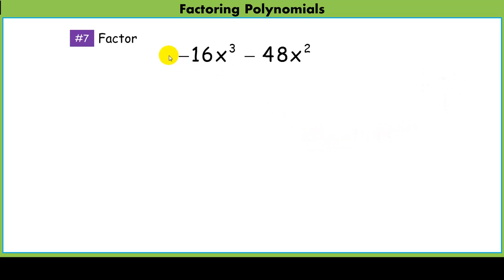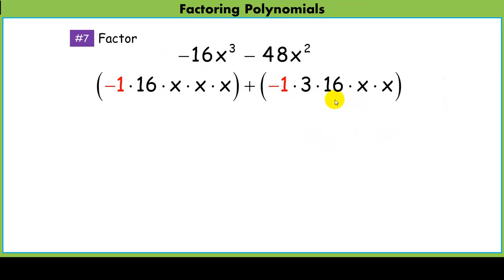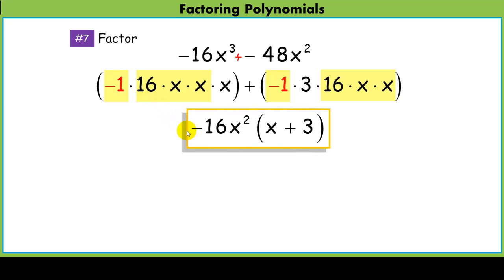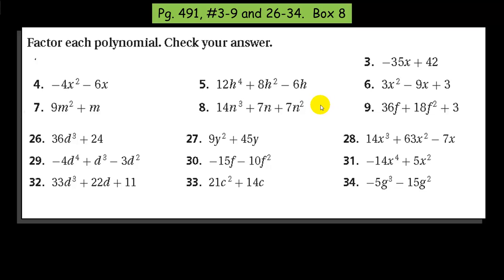This is another challenging one because of the negative signs. Always think of that negative as a negative 1. This term right here is plus a negative 48x squared. When we look at what's common, we have to pull out that negative as well as everything else that's common. The greatest common factor is negative 16x squared, and what's left behind is x plus 3.